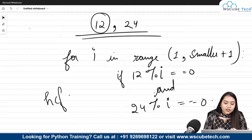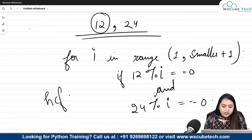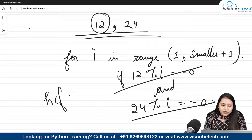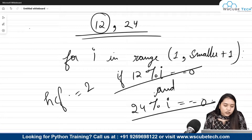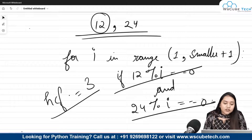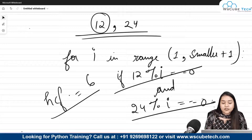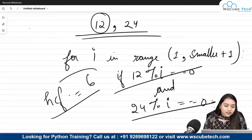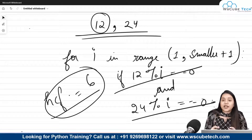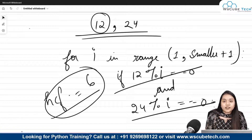Whatever number satisfies both conditions gets stored inside our HCF variable. It checks 2, then 3, then 4, then 5, then 6 — each time the new value replaces the previous one in HCF. So whatever is the last number stored in HCF will be our highest common factor.